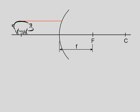Rule number one says if we start at the top of the object and go parallel to the principal axis, the light ray is going to bounce back to the left. It will bounce back as if it came from the focal point — that's how we know to angle this reflected ray in that direction. Go in parallel, bounce out along a line that goes through the focal point.